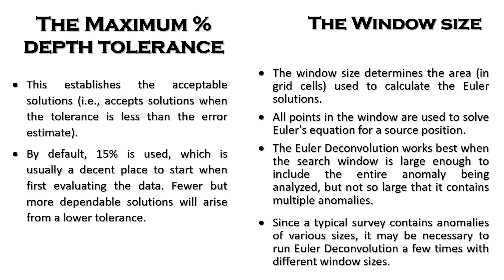The maximum percentage depth tolerance establishes acceptable solutions — that is, solutions where the tolerance is less than the error estimate. By default, 15% is used, which is a decent place to start when first evaluating the data. Fewer but more dependable solutions will arise if you use a lower tolerance, for example reducing the percentage to less than 50%.